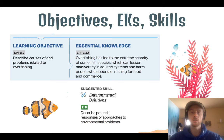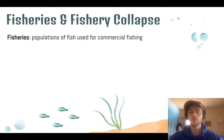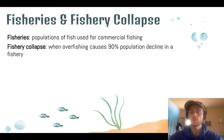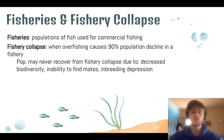Fisheries are populations of fish used for commercial fishing — areas where people fish in large quantities, sell the fish, and make a living. Fishery collapse is when overfishing causes a fish population to decline by over 90 percent. The problem is that the population may never recover, because small populations face low genetic diversity, skewed sex ratios making it hard to find mates and reproduce, and even inbreeding depression when closely related members breed with one another.